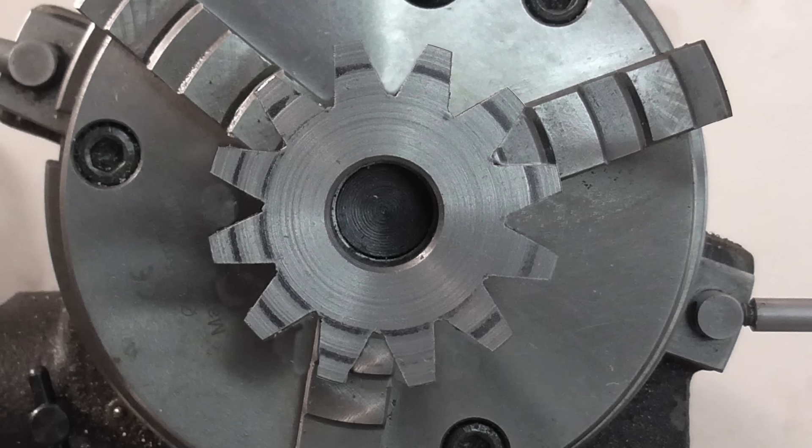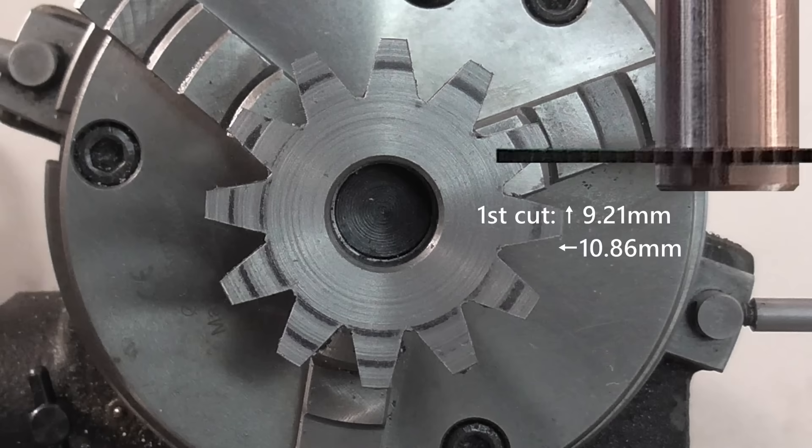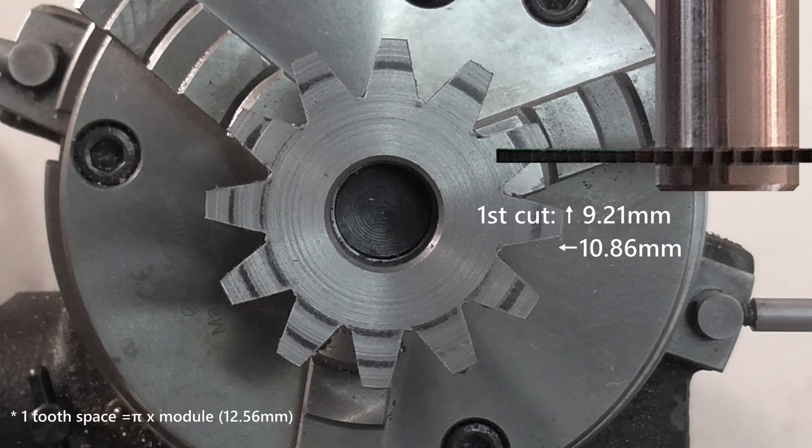To make the next series of cuts, I'm going to rotate the gear half a tooth anti-clockwise from the original starting position. I'm also going to move the saw in a straight line half a tooth space at an angle of 20 degrees from the vertical.